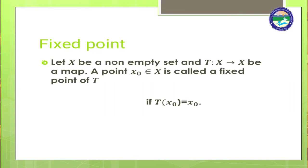A point x₀ belonging to x is called a fixed point of T if T(x₀) = x₀, meaning the image of x₀ comes back to x₀. Just like if we stand in front of a mirror and our image comes back to us, that point is called a fixed point. Like if we cut a burger from different angles, one point remains common — that point is called our fixed point.